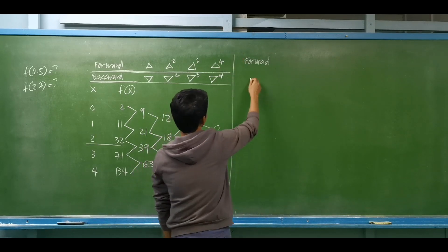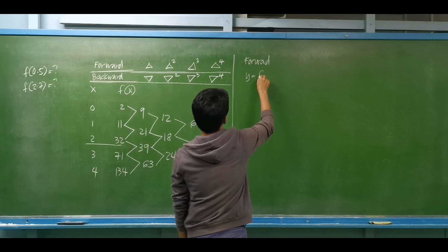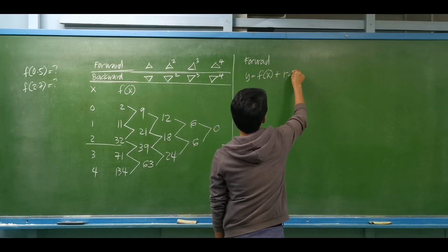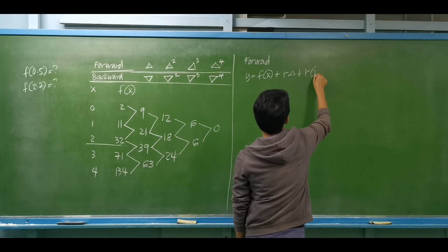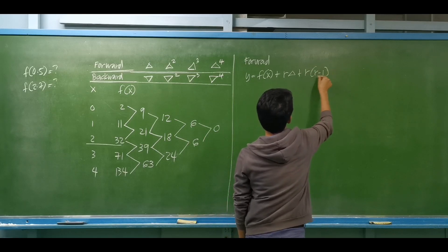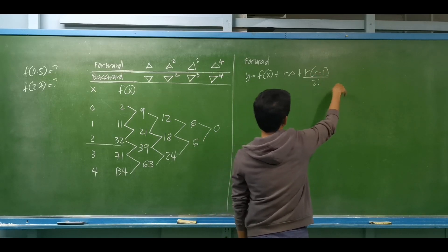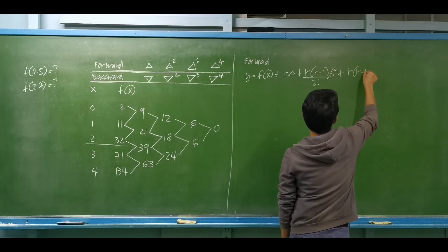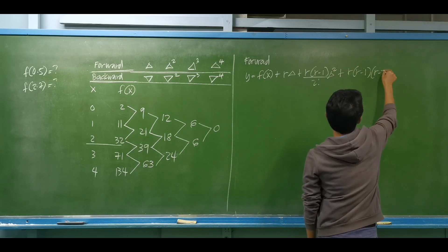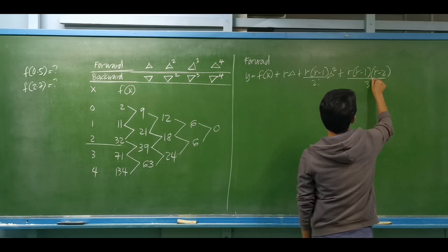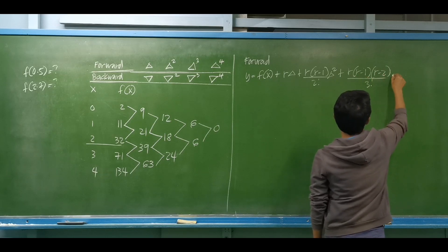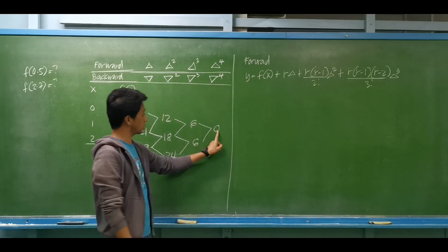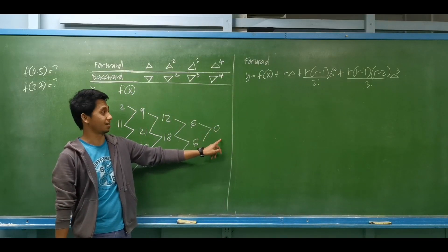By this equation, the forward formula is: y = f(x₀) + r·Δ + r(r−1)/2!·Δ² + r(r−1)(r−2)/3!·Δ³. We may stop here since the last difference is zero.